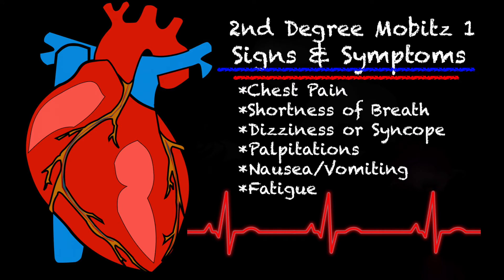Before we get into the signs and symptoms, I want to make it clear that with first degree heart blocks and second degree Mobitz 1, typically our patient is asymptomatic unless they're experiencing some kind of cardiac event — they may not feel any of these things. But chest pain can be present, as well as shortness of breath, dizziness or syncope, heart palpitations or feeling like your heart is fluttering, nausea, vomiting, and fatigue.